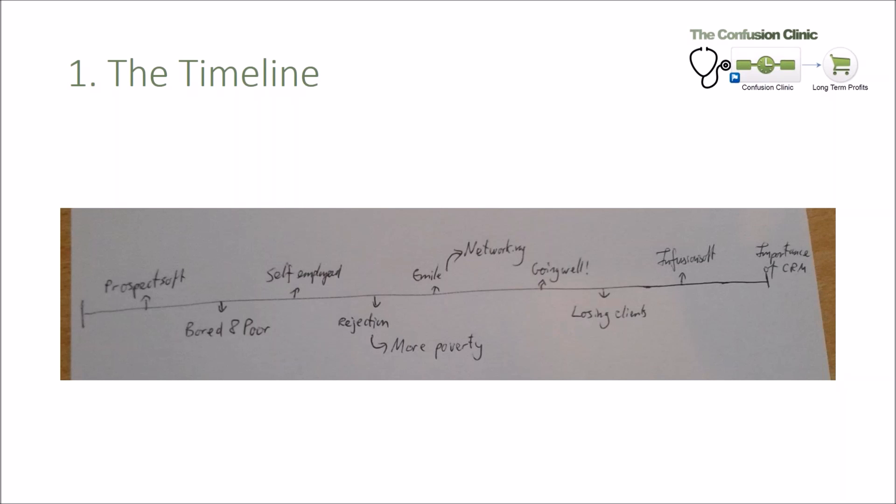And the important thing about the timeline is it has ups and downs. Because every story has like an ebb and a flow. Good things happen, bad things happen. Every movie you go and see has ups and downs.